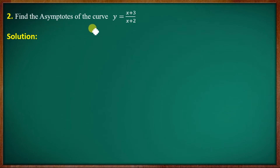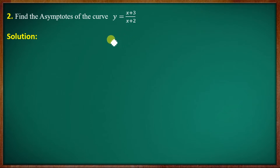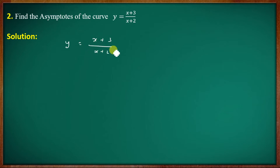Second question: Find the asymptotes of the curve y equal to x plus 3 all divided by x plus 2. The function is y equal to x plus 3 by x plus 2.